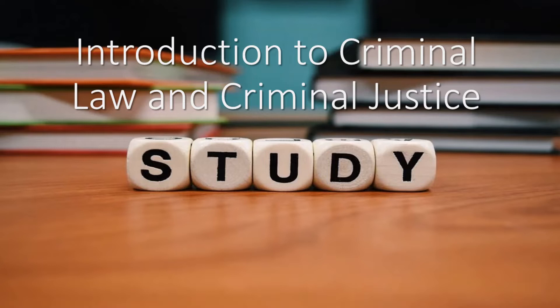A key difference between Substantive Criminal Law and Civil Law lies in the standard of proof needed to find guilt in each case. For criminal law, guilt is proved by evidence beyond reasonable doubt. For civil law, guilt is proved on the balance of probabilities, which requires a lower standard of proof, and therefore less evidence indicating guilt, than proof beyond reasonable doubt.